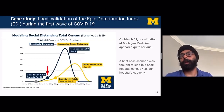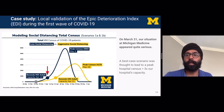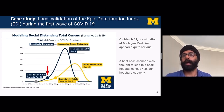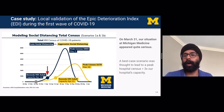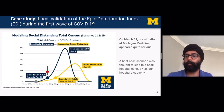I'll do a case study related to the local validation of the Epic Deterioration Index during the first wave of COVID-19. In March of 2020, our situation at Michigan Medicine appeared to be pretty serious. On March 24th, this chart was released by our health system, anticipating that under a best-case scenario we were going to reach a peak hospital census more than three times our hospital's capacity. Our hospital has about 1000 beds, of which about 800 are licensed for adults. We were expected to exceed our hospital capacity on April 7th. The question came up: can we find a model that will help us figure out which patients to send to a field hospital if we were to open one?